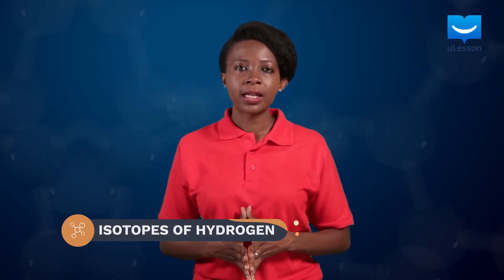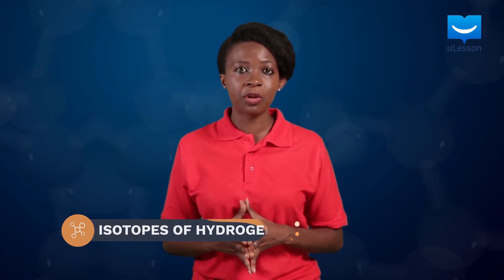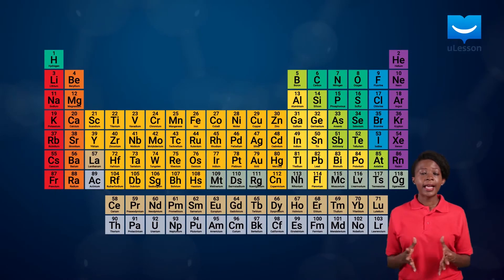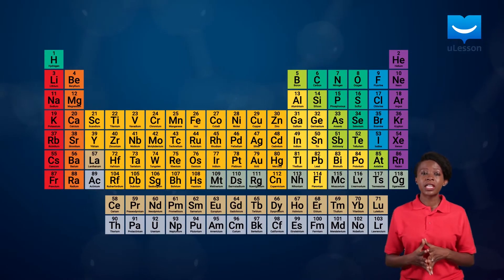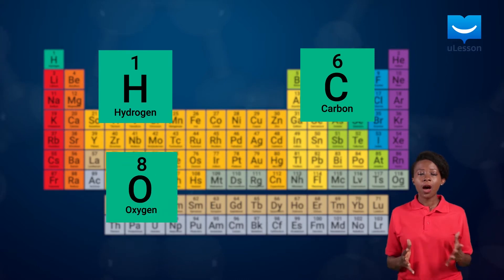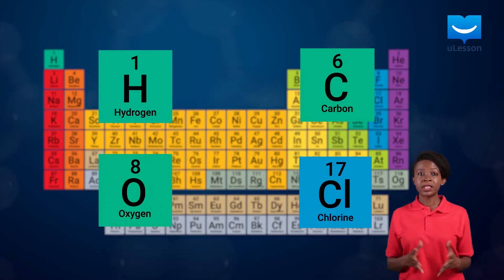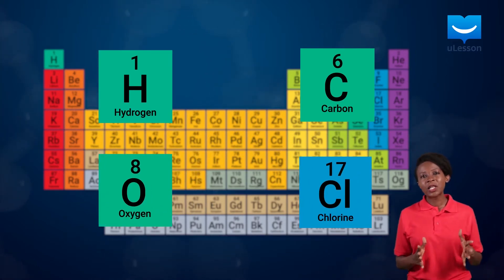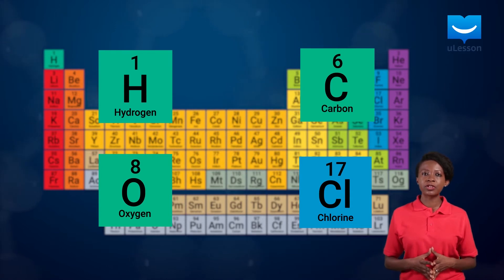As explained in our lesson on isotopy, the atoms of some elements in the periodic table have the ability to exhibit different atomic mass but the same atomic number. Examples of such elements include hydrogen, carbon, oxygen, and chlorine. In this lesson, we will take a close look at the isotopes of hydrogen.